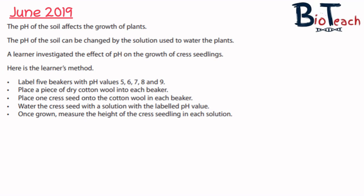The next question is from June 2019. This experiment investigates the growth of cress seedlings in different pH solutions. The method involves labelling five beakers with pH values 5, 6, 7, 8, and 9, placing a piece of dry cotton wool into each beaker, placing one cress seed onto the cotton wool, watering it with the labelled pH solution, and once grown, measuring the height of the cress seedling in each solution.